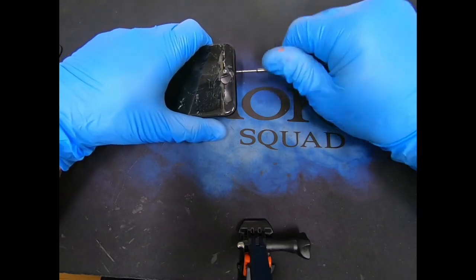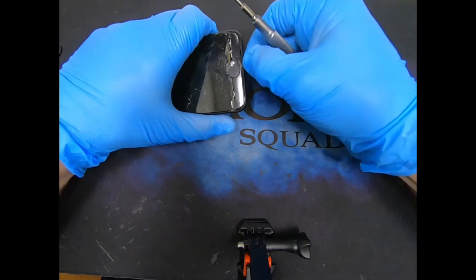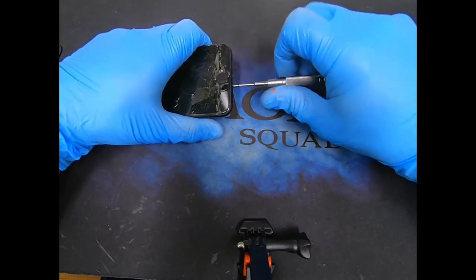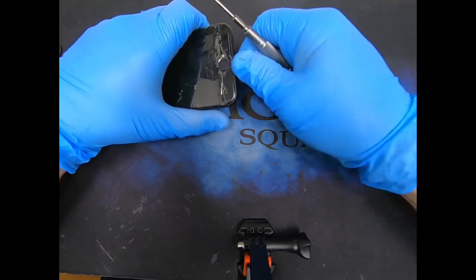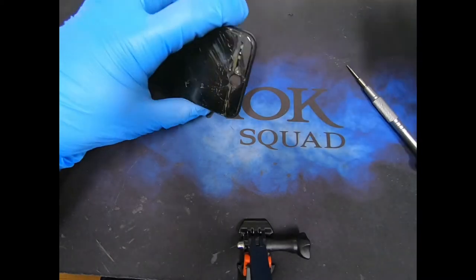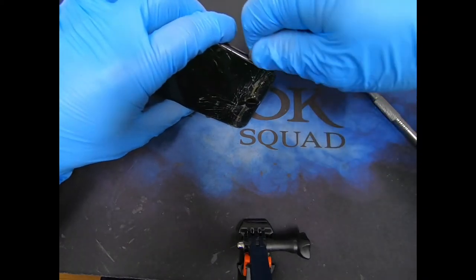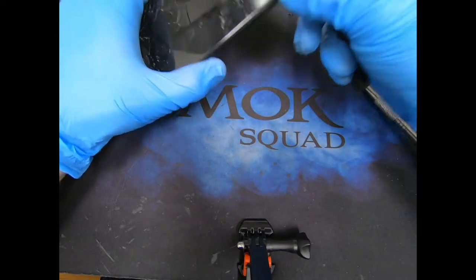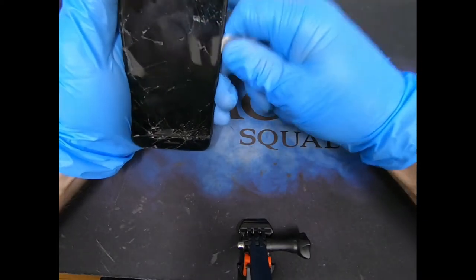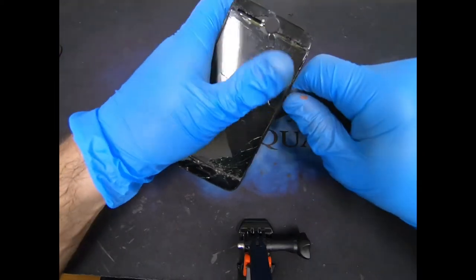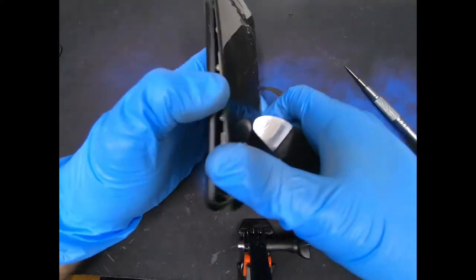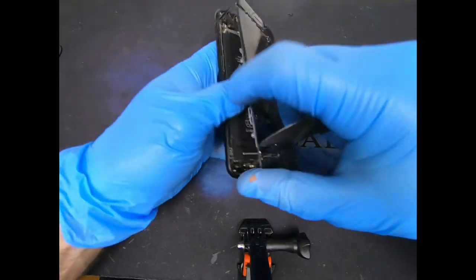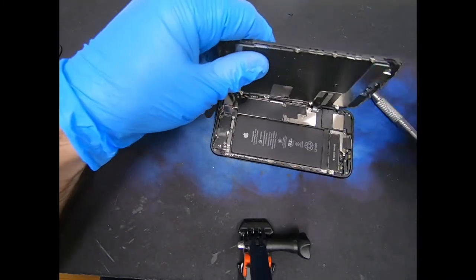I'm going to remove the bottom pentalope screws. Going through the side, never going through the middle. You can damage the home button. Go to the other side. Opens to the right just like the iPhone 7s, 8s.